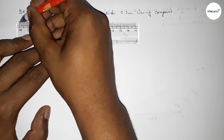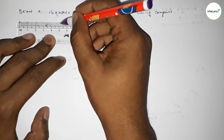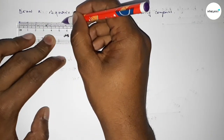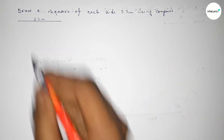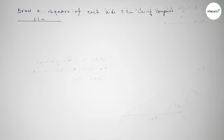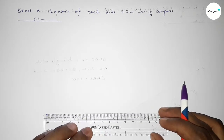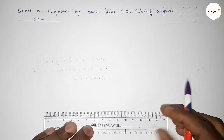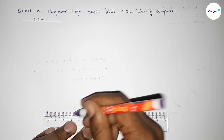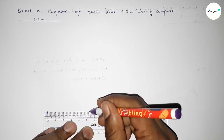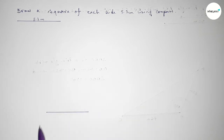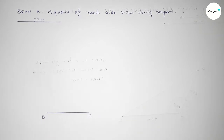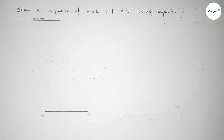We draw a line of length 5.3 centimeters, counting 0, 1, 2, 3, 4, 5 — and this is the 5.3 centimeter line. We take point B at one end and point C at the other end.